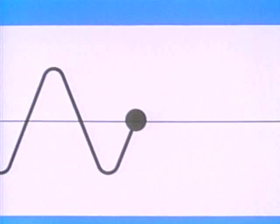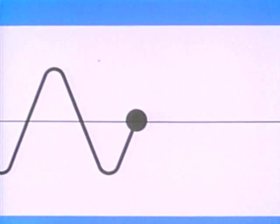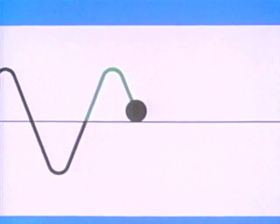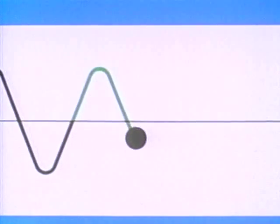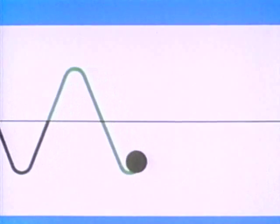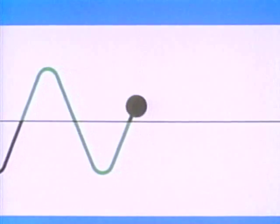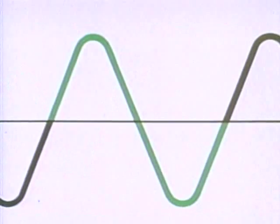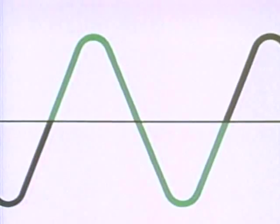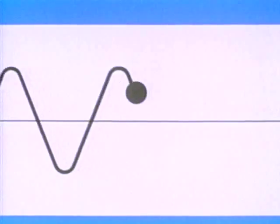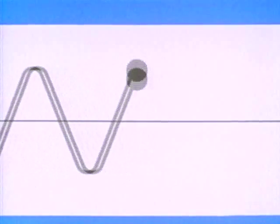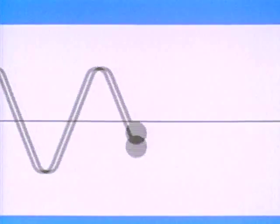If we put in an axis, we can make some definitions. The movement of our molecule from the axis, to as far above the axis as it goes, to as far below the axis as it goes, and then back to the axis represents one vibration or cycle. So this is one cycle. The frequency of a sound wave is a measure of how many cycles per second the sound wave produces in the medium it's traveling through.